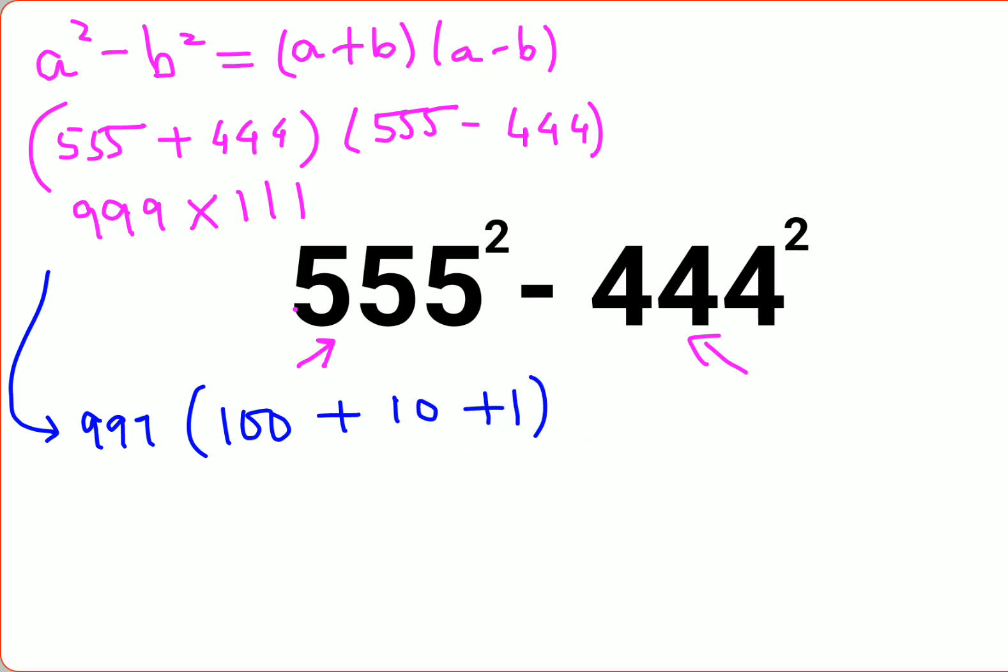So when you do that, 999 multiplied by 100 gives you 99900. When you multiply 999 by 10, you get 9990.